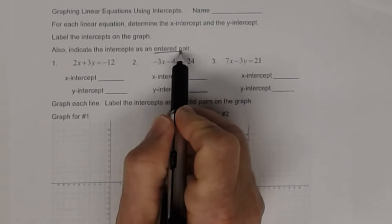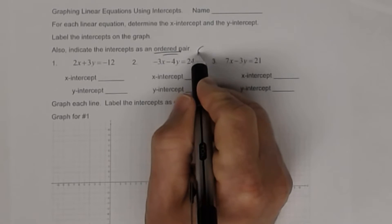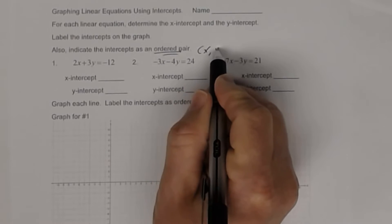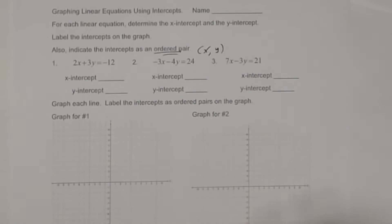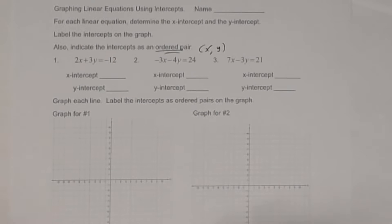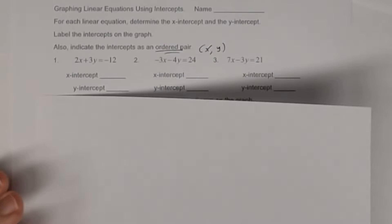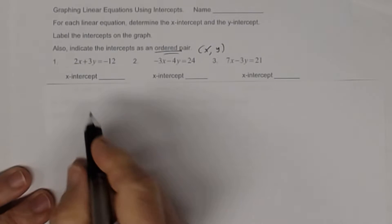Remember, ordered pair — you need an x-coordinate and a y-coordinate. All right, so let's go ahead and look at the first one.